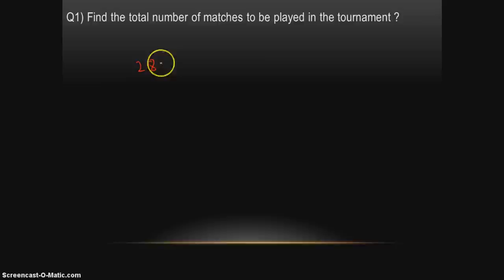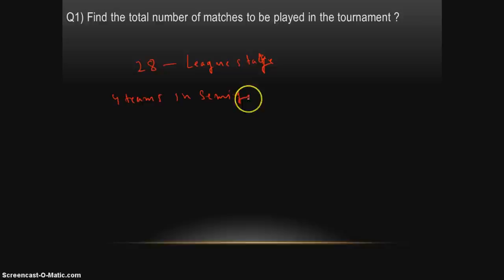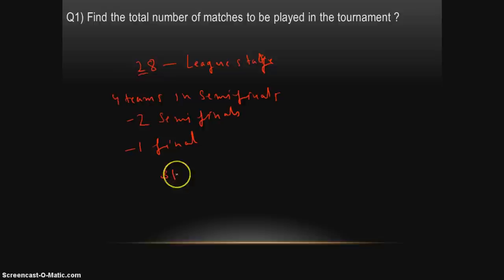Question 1: find the total number of matches to be played in the tournament. We've already established 28 matches in the league stage. Then 4 teams go to the semi-finals, giving 2 semi-final matches and 1 final. Total: 28 plus 2 plus 1 equals 31 matches.